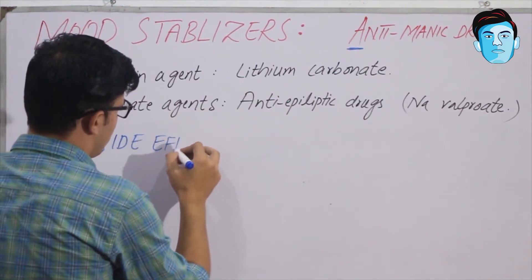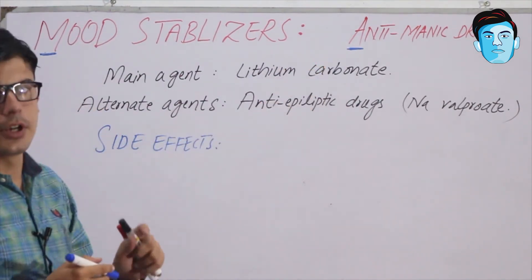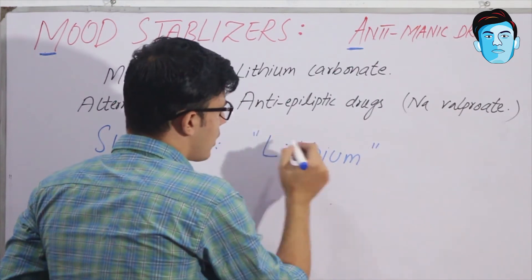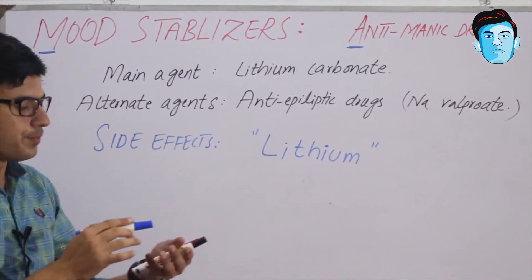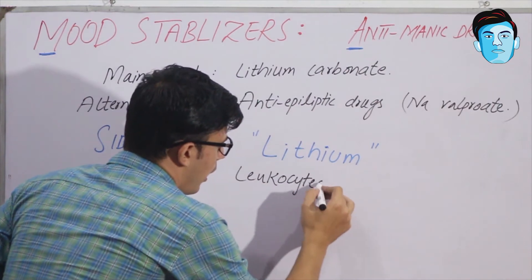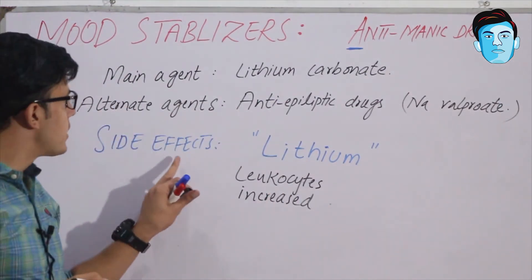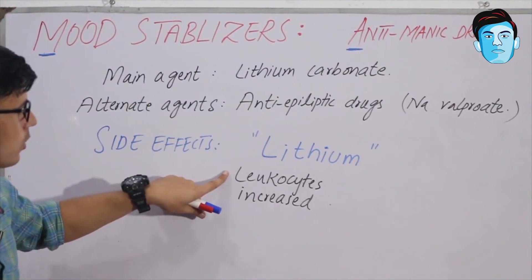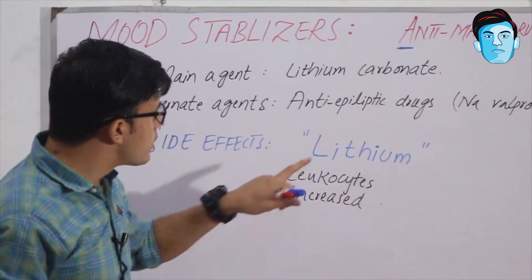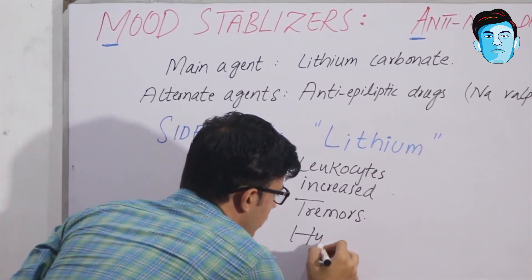Now if we talk about the side effects of the anti-manic drugs, we have a trick using the word LITHIUM. L stands for leukocytes, I stands for increased — so the main side effect is that leukocytes increase, meaning the patient suffers from leukocytosis. T stands for tremors, and H stands for hypothyroidism.